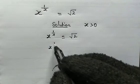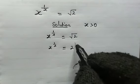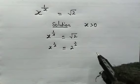So, we have here x to the power of 1 over x, this is equal to root 2, which is the same as 2 to the power of 1 over 2.